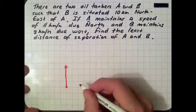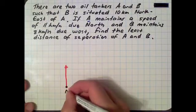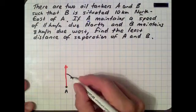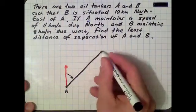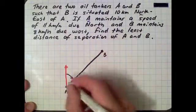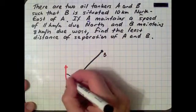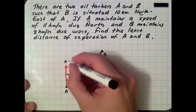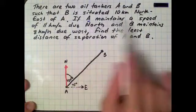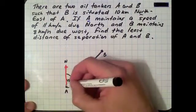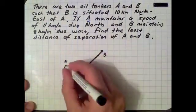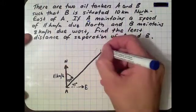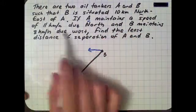Let's do our north line. We want tanker A. B is situated 10 kilometers northeast of A - northeast is right in the middle, that's 45 degrees. There's tanker B, and that distance is 10 kilometers. So we've got 45 degrees there and 45 degrees there. A maintains a speed of 11 kilometers per hour due north - it's traveling in that direction. And B is traveling west at 8 kilometers per hour.